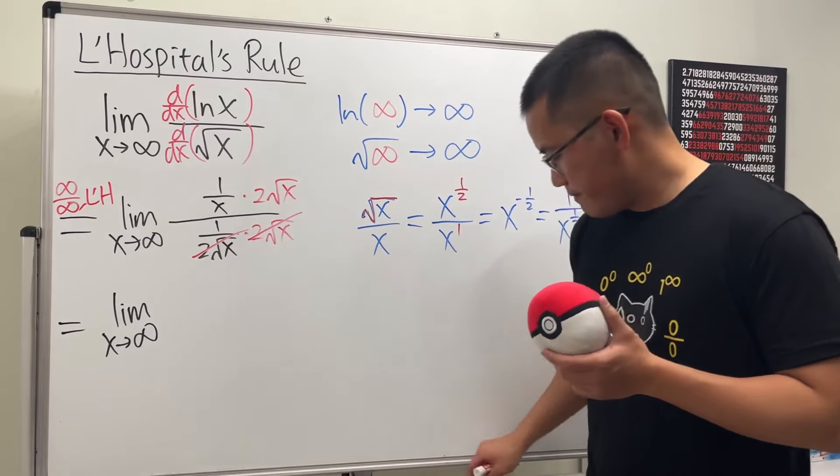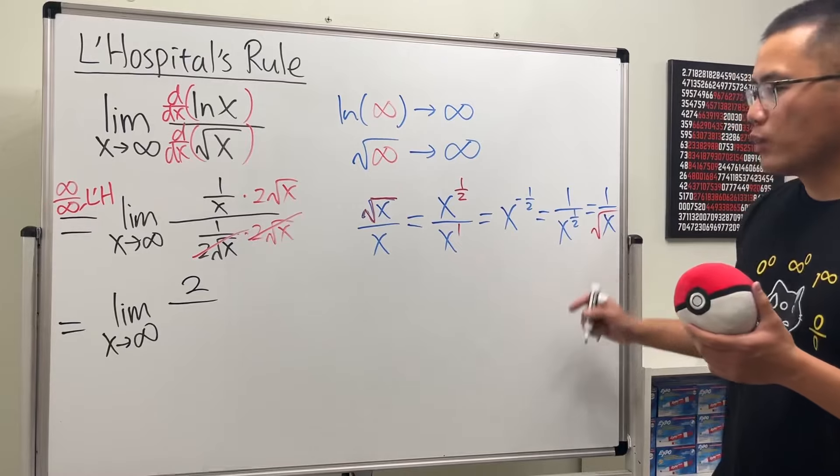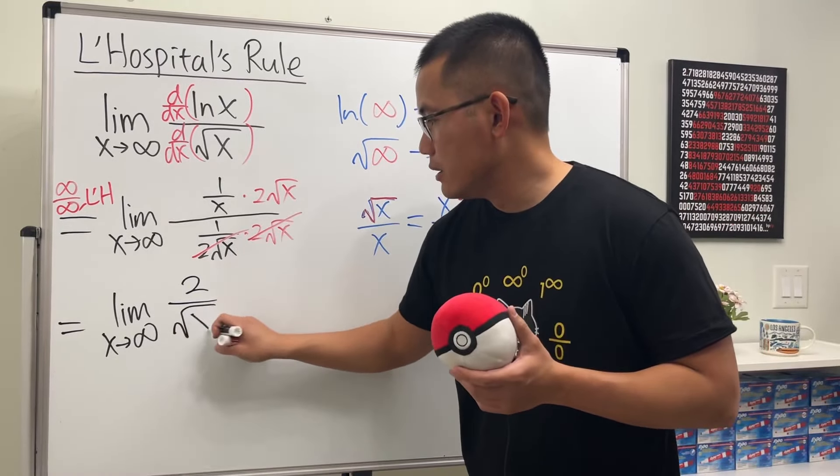But either way, we have a 2 on the top, and we have the square root of x on the bottom.